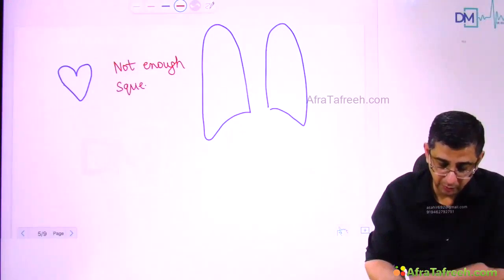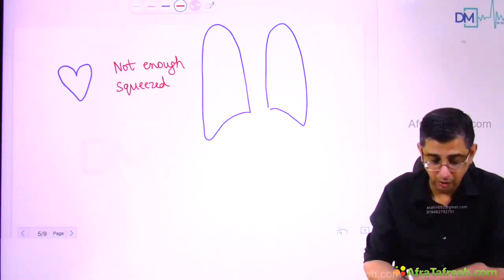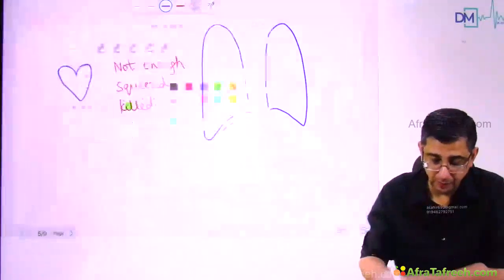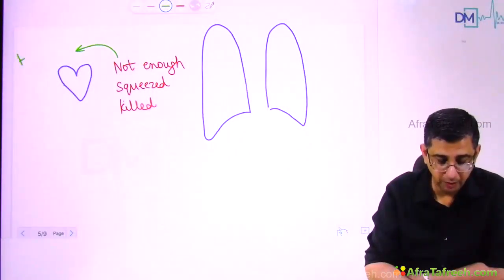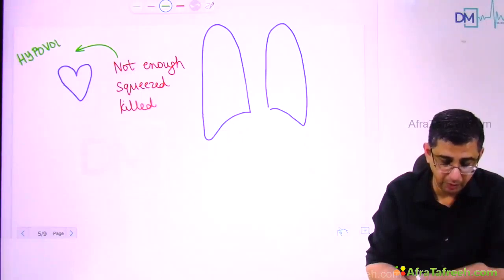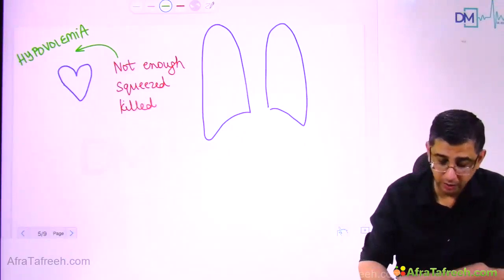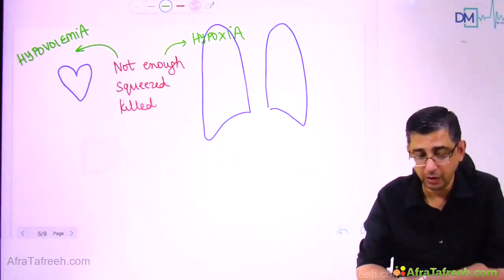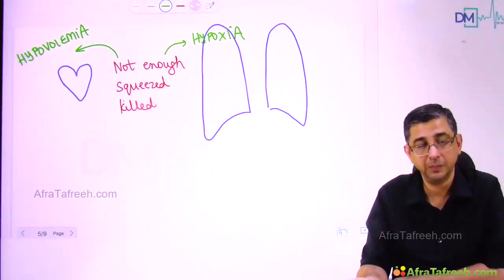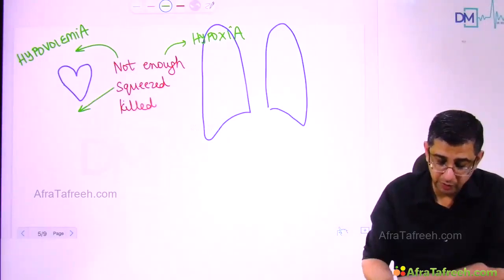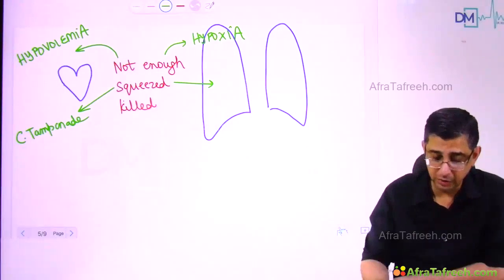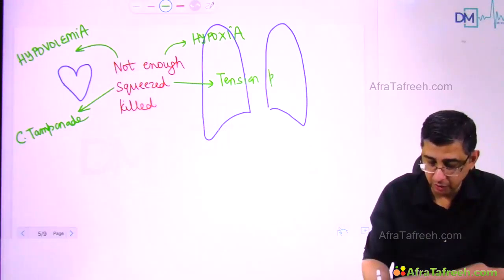Another possibility: the heart is squeezed from outside, or the lungs are squeezed from outside. Heart squeezed from outside is cardiac tamponade. Lungs squeezed from outside is air at positive pressure — that is tension pneumothorax. Then the heart tissue has died or the lung tissue has died: heart tissue dying is acute myocardial infarction of the left main coronary artery, and lung tissue dying is massive pulmonary embolism, which could result in a Palla sign or Hampton's hump.